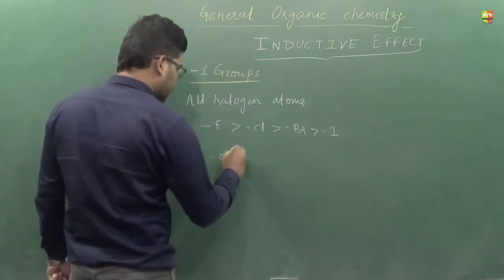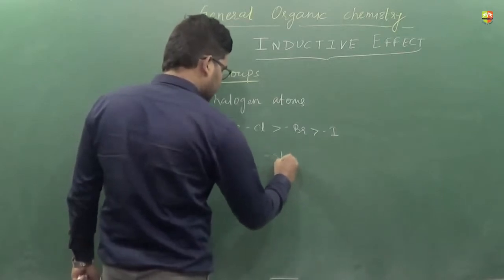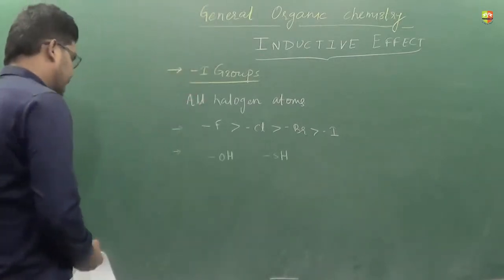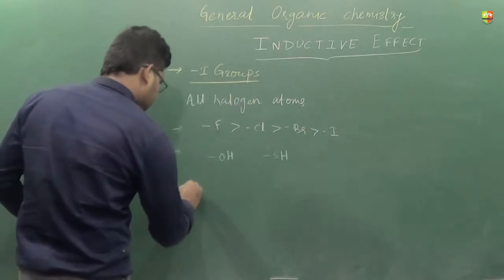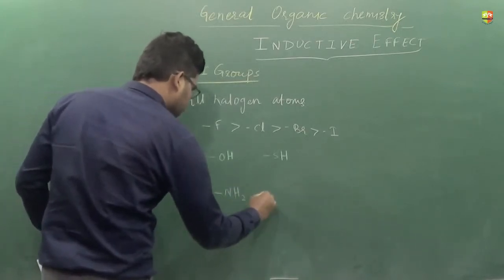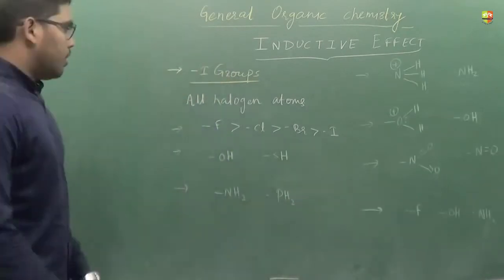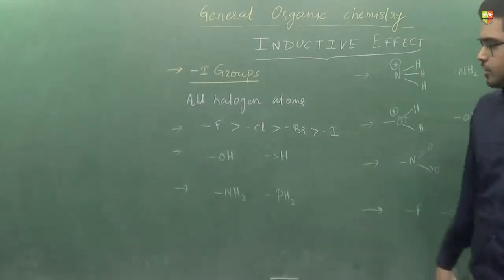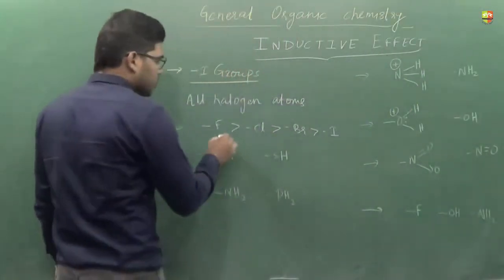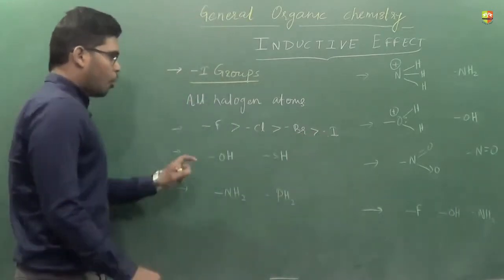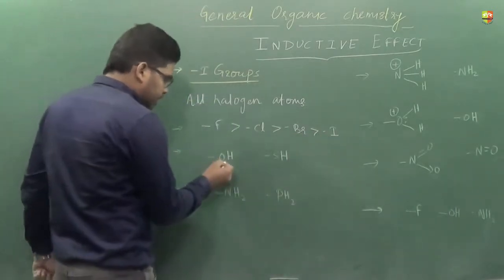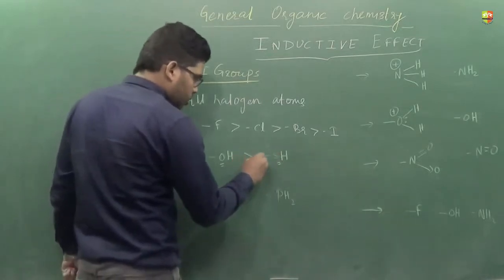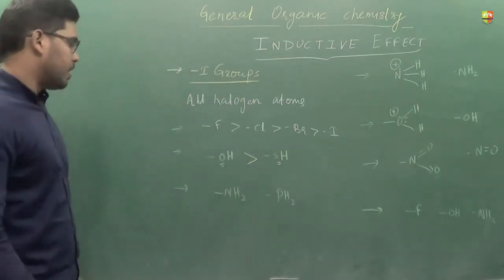Now let's compare the minus-I nature of OH and SH, NH2 and PH2. You can pause the video and try these on your own. For OH and SH, oxygen is more electronegative than sulfur, so the order of minus-I effect is OH > SH.